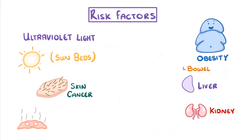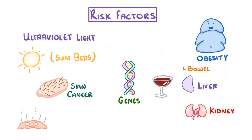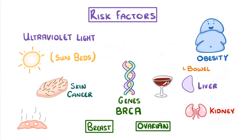And just like obesity, drinking alcohol is also linked to an increased risk of liver cancer. Risk factors aren't always lifestyle choices though. Sometimes it's the genes that we inherit from our parents that make us more susceptible to certain cancers. For example, the BRCA genes are linked to developing breast and ovarian cancer.